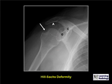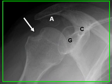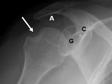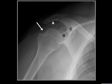This is another example of a Hill-Sachs deformity. The white arrow is pointing to the deformity along the lateral aspect of the humeral head. It only takes one dislocation of the shoulder to produce a Hill-Sachs deformity. The G represents the glenoid, the A the acromion, and the C the coracoid process.